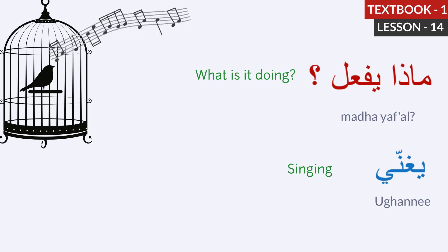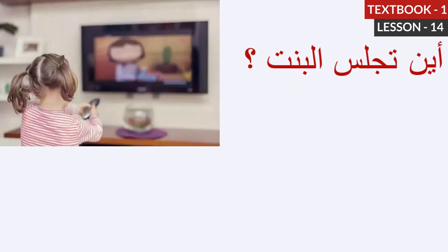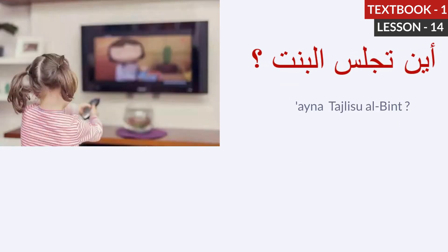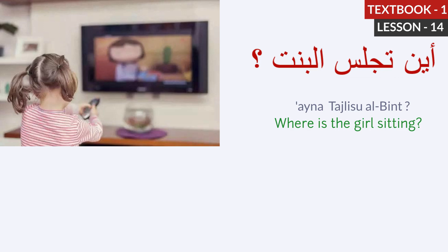The next one. Aina tajlisu al-bint. Where is the girl sitting? Aina means where. Tajlisu means sitting. Al-bint means the girl. Let's repeat. Aina tajlisu al-bint. Where is the girl sitting?